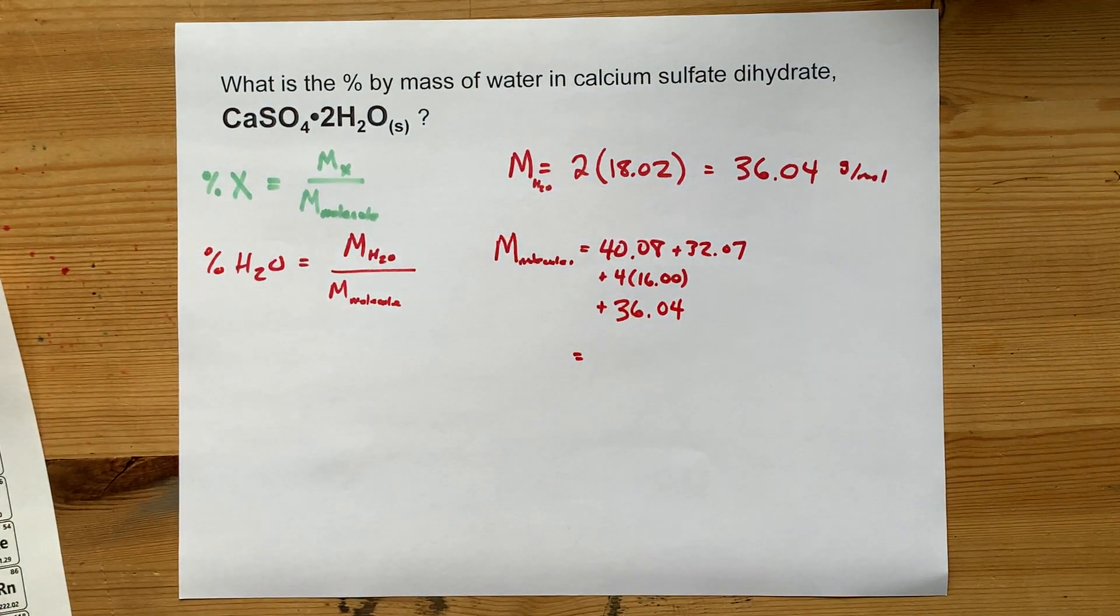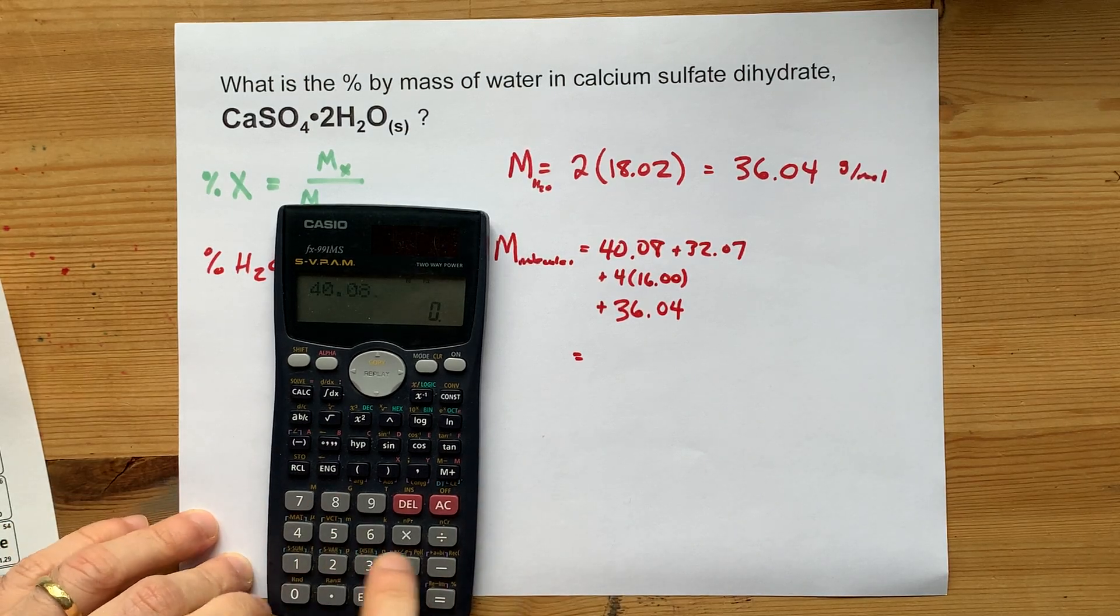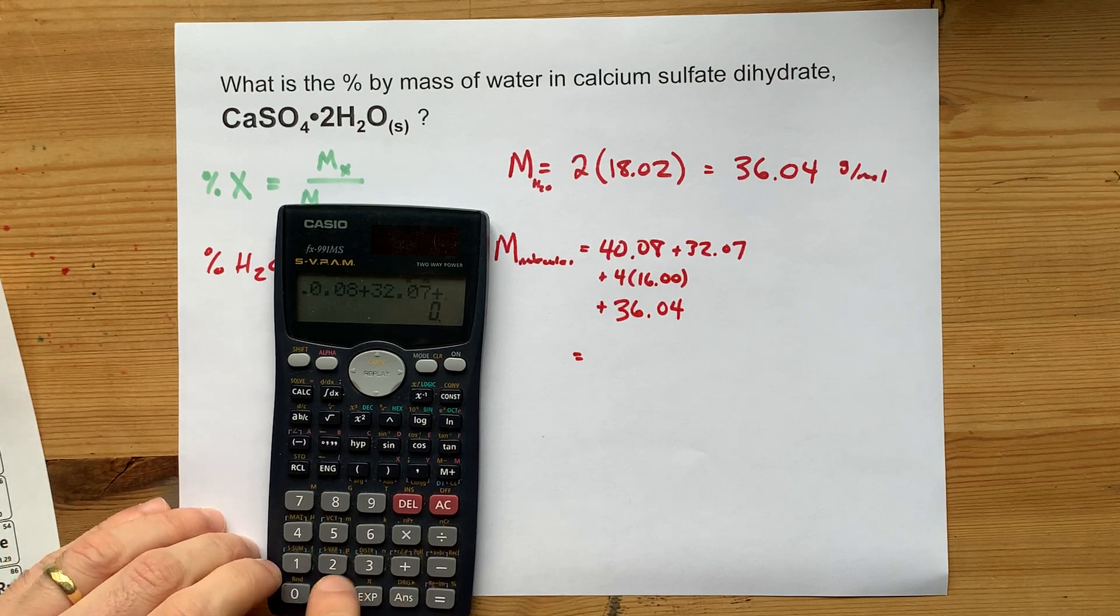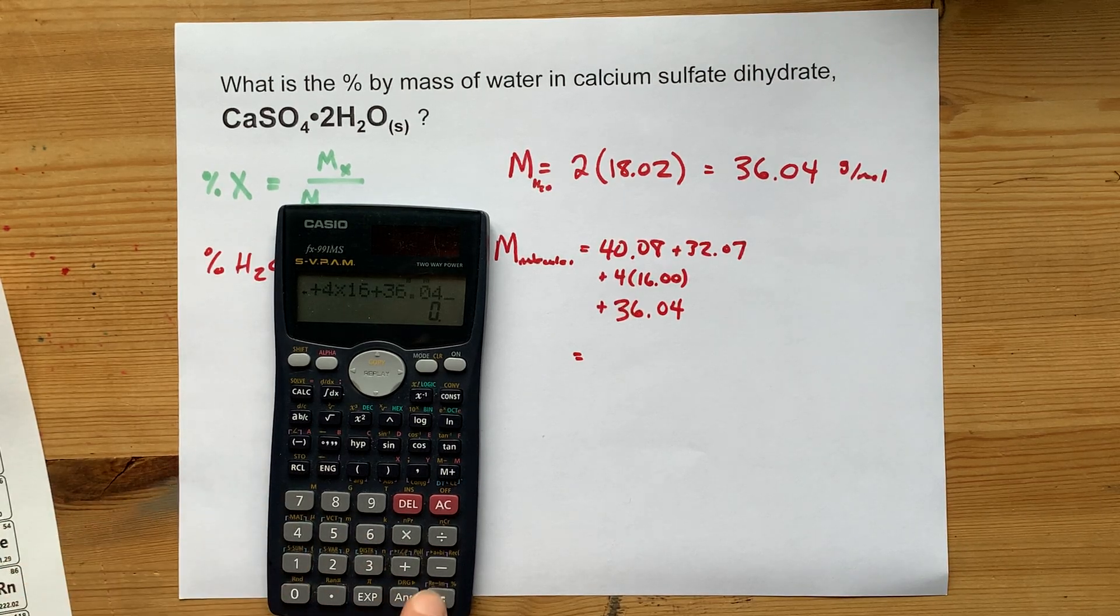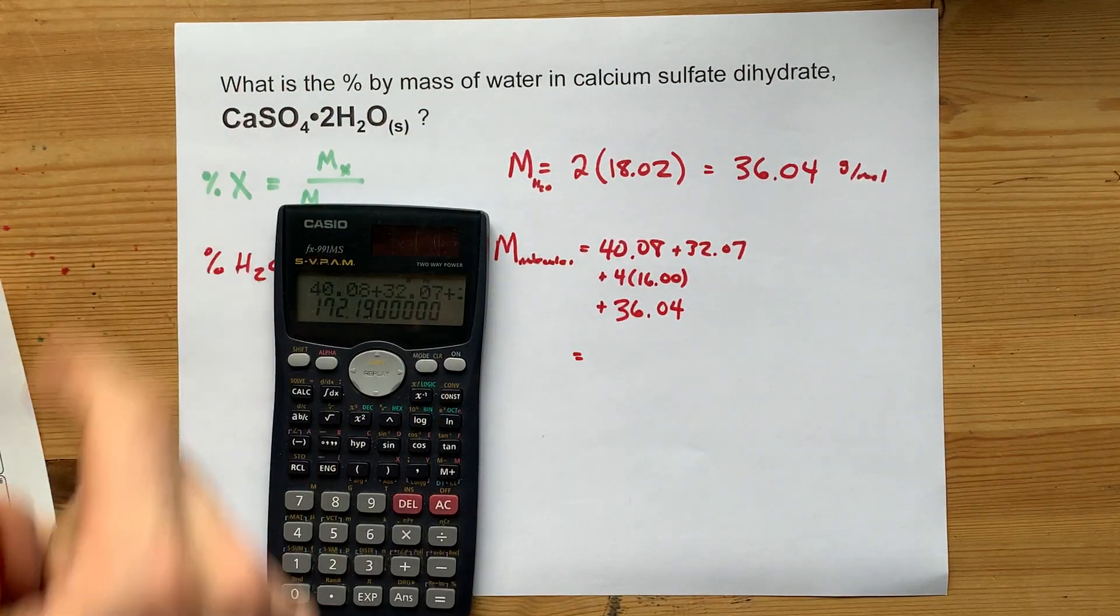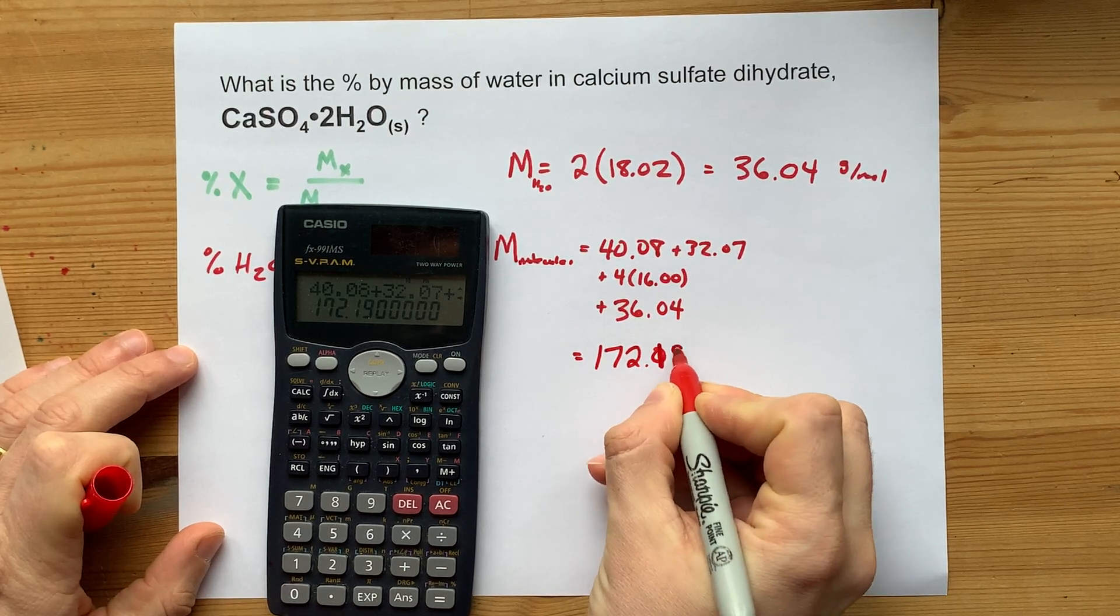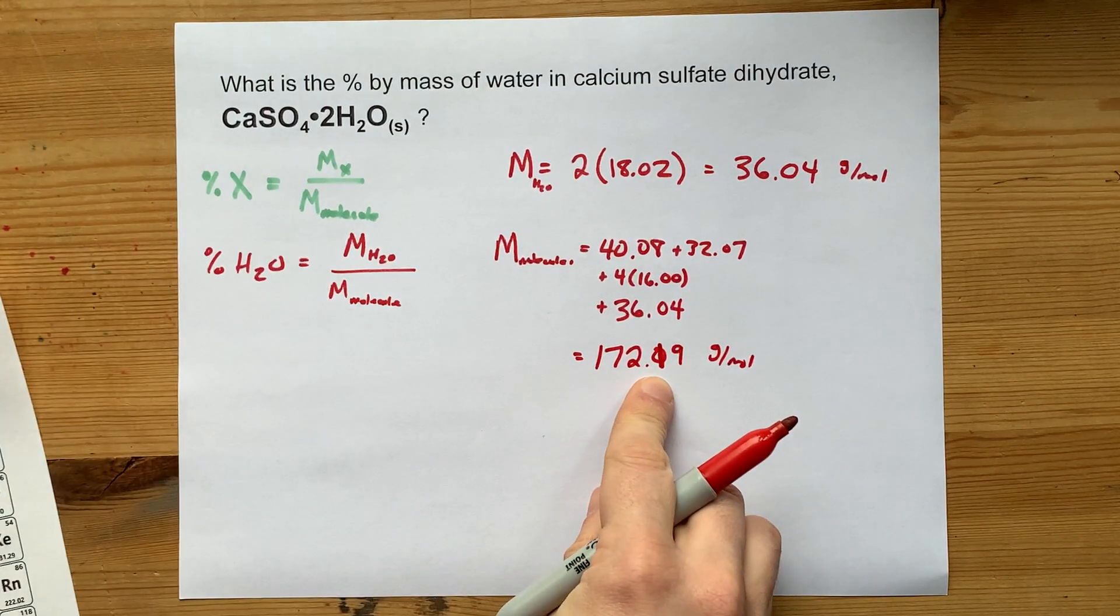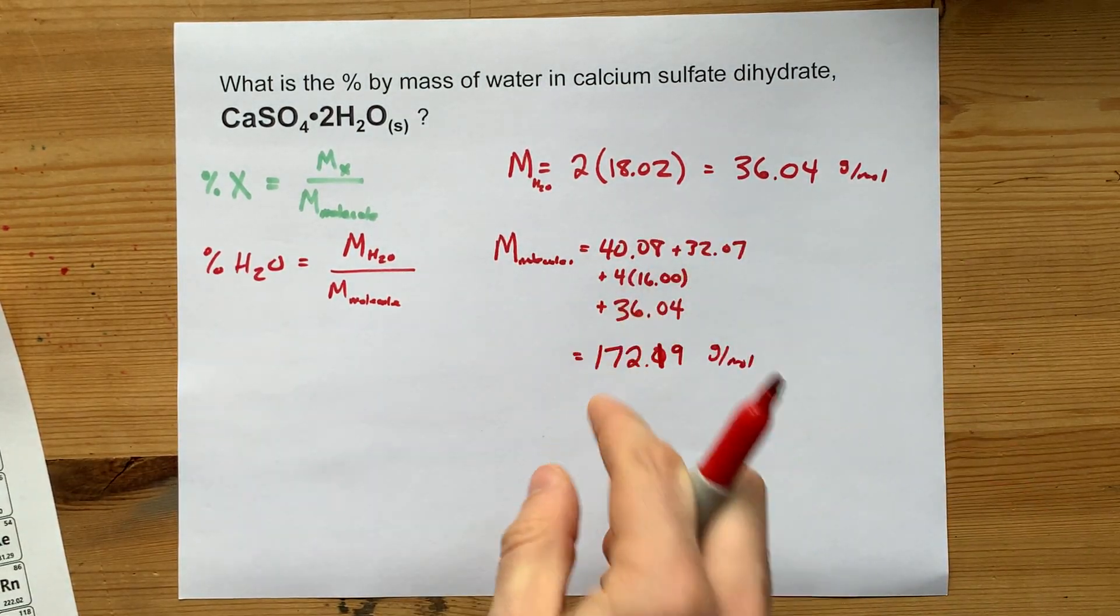and all the water that we had before. That's an extra 36.04. Now, I'm going to add all that up on my calculator. 40.08 plus 32.07 plus 4 times 16 plus 36.04. The molar mass of this whole molecule is 172.19 grams per mole. And of that 172,